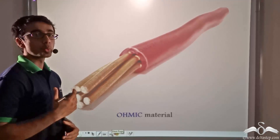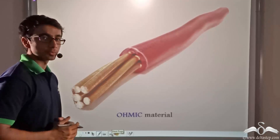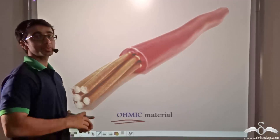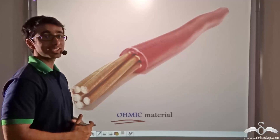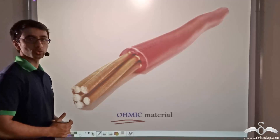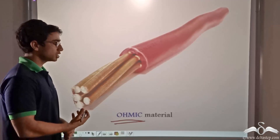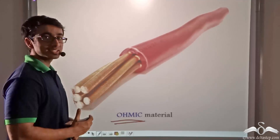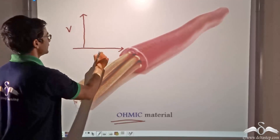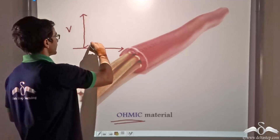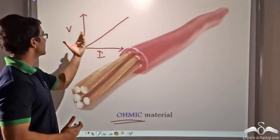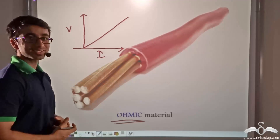Materials are classified based on whether or not they follow Ohm's law. Materials which follow Ohm's law are known as ohmic materials, and materials which do not follow it are known as non-ohmic materials. A copper wire is shown here as an example of an ohmic material. An ohmic material is one which has a linear relationship between voltage and current — that is, a straight line passing through the origin.